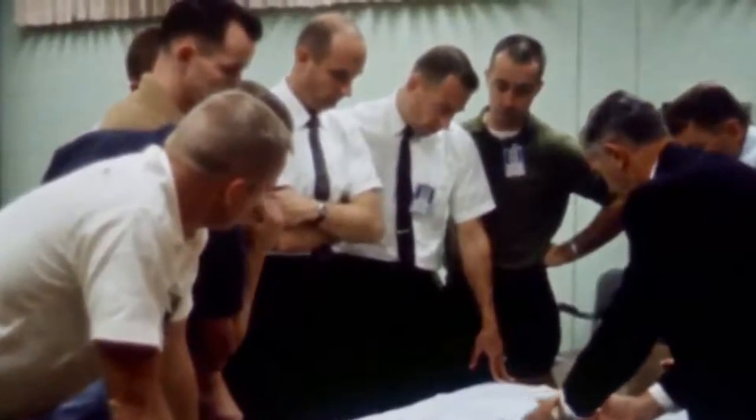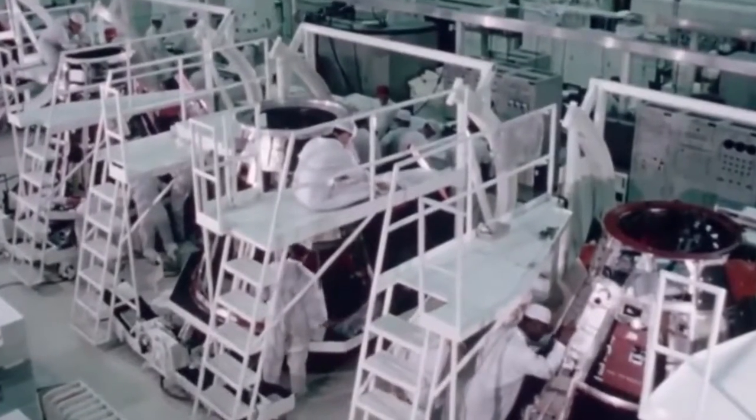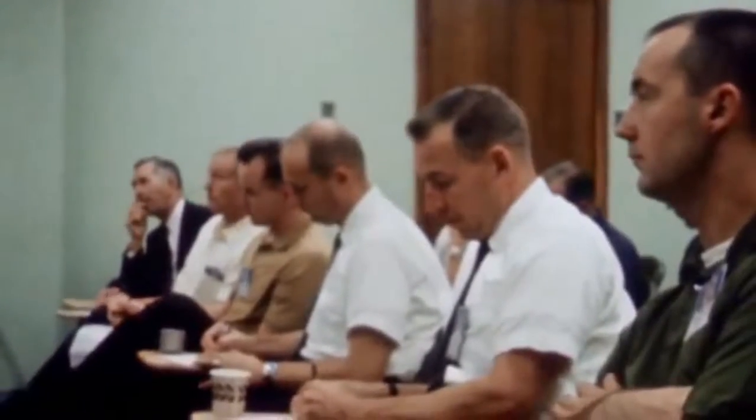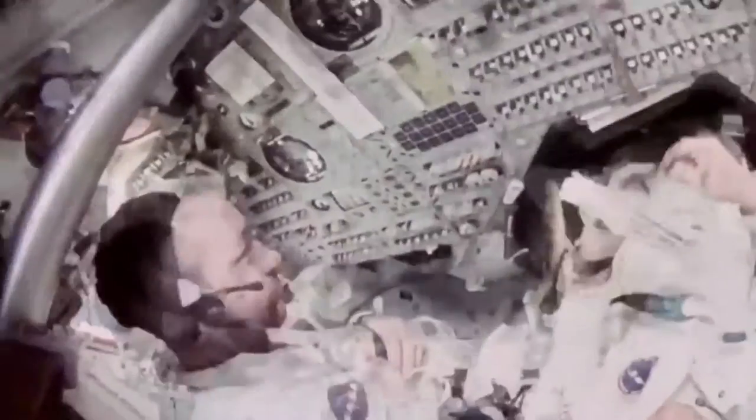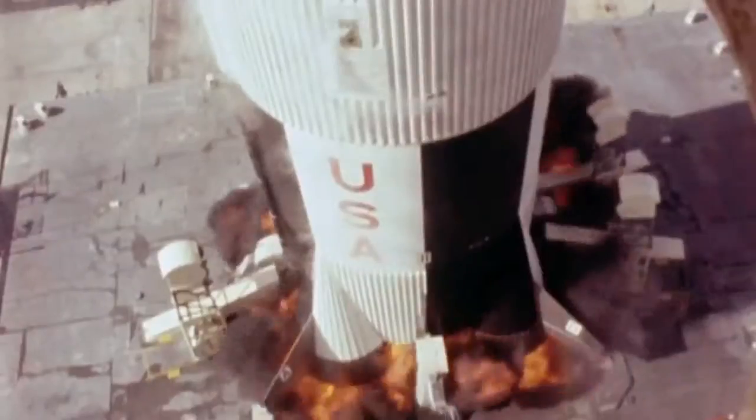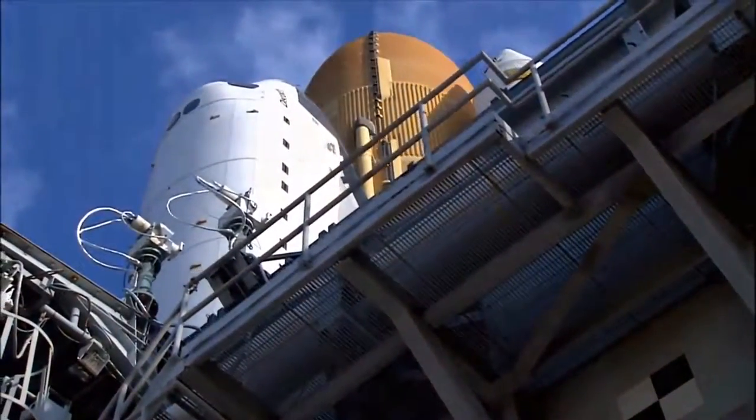One reason we got there so quickly was because NASA made the decision early on to let the engineers lead the charge toward the moon, rather than the norm which was to have a more bureaucratic structure. That is not to say there was not structure. There was just an understanding that more risk must be taken in order to complete the mission in the given timeline.